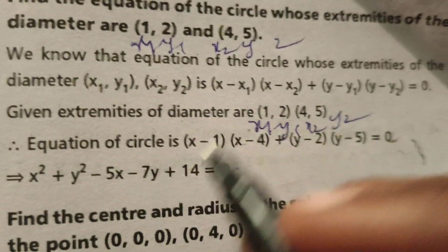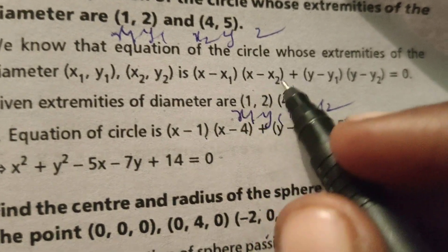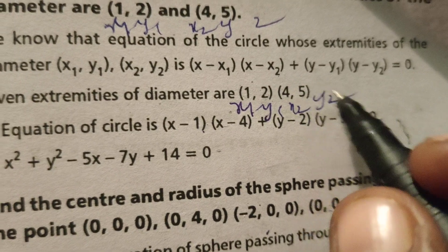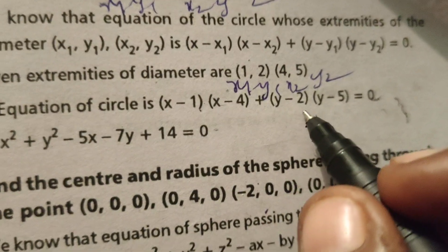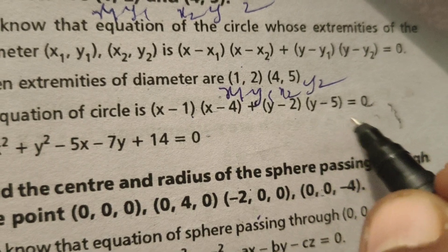equation of the circle is x minus, what is x₁? 1. x minus, what is x₂? 4 plus y minus, what is y₁? 2. y₂ means 5 equals to 0.